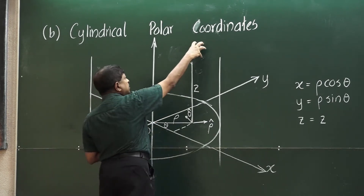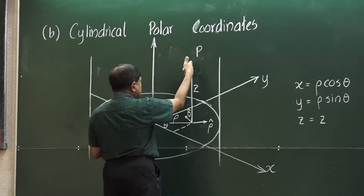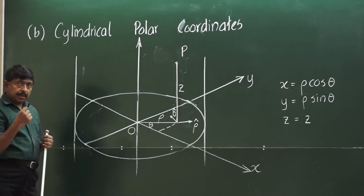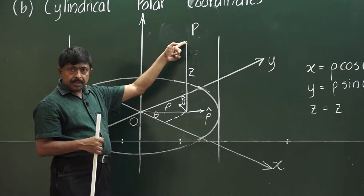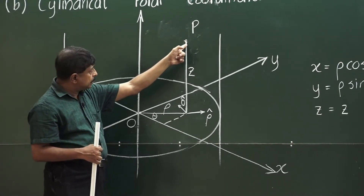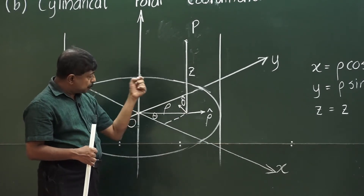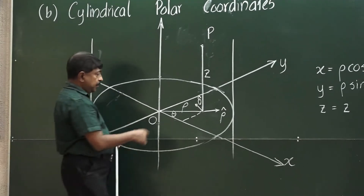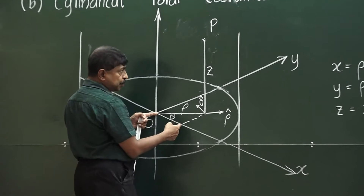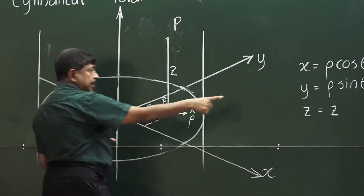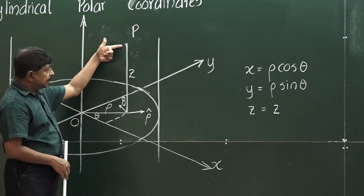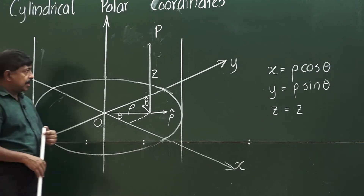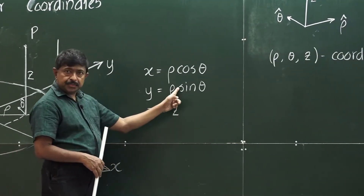Now, if you have any point P in the space in R3, you project that point onto the xy plane. The point you get after projection, you write that point in terms of polar coordinates. So if the distance is rho and this angle is theta, then x is rho cos theta, y is rho sin theta as in polar coordinates, and the third coordinate z is simply z.